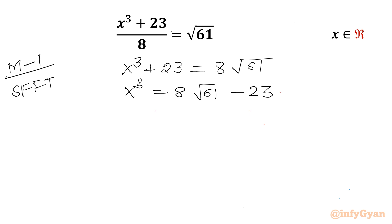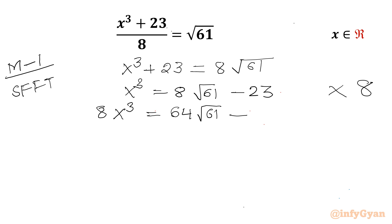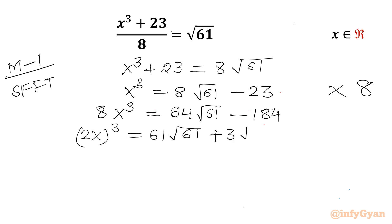Now we will multiply this equation by 8, giving 8x³ = 64√61 − 184. I can write 8x³ as (2x)³. Then I split 64 as 61 + 3, so the right side becomes 61√61 + 3√61 − 184.